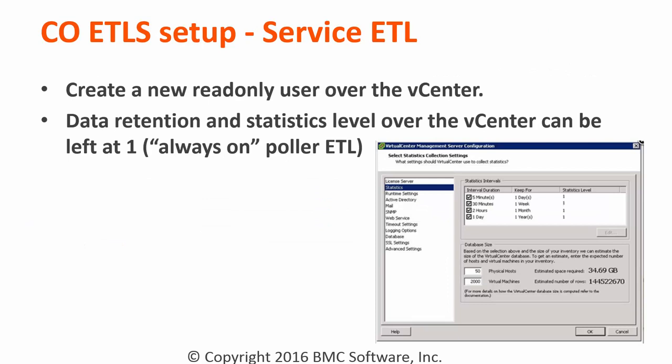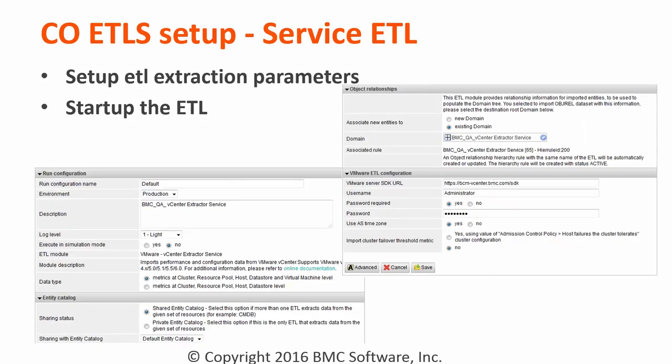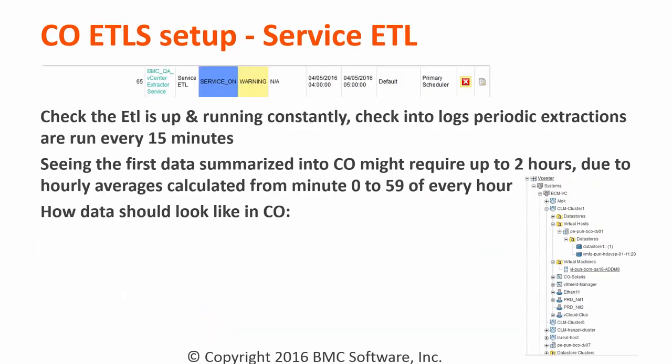You don't need to modify the login level over the vCenter, you can leave it at one. To set up a vCenter ETL, set up the ETL extraction parameters, specifically the SDK URL, the username and password for the user you have. Then proceed with the standard ETL settings such as the entity catalog and the OBJRL dataset. Run the ETL and check its wrapper running constantly. It will do periodical extraction every 15 minutes.